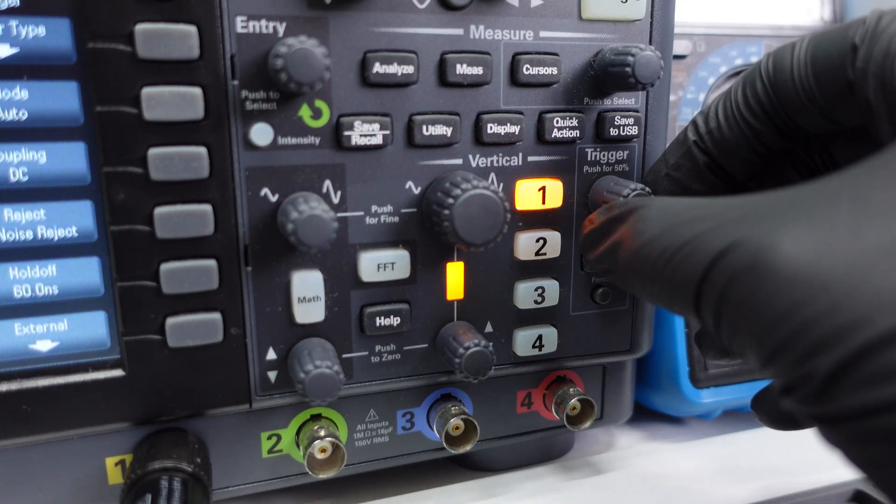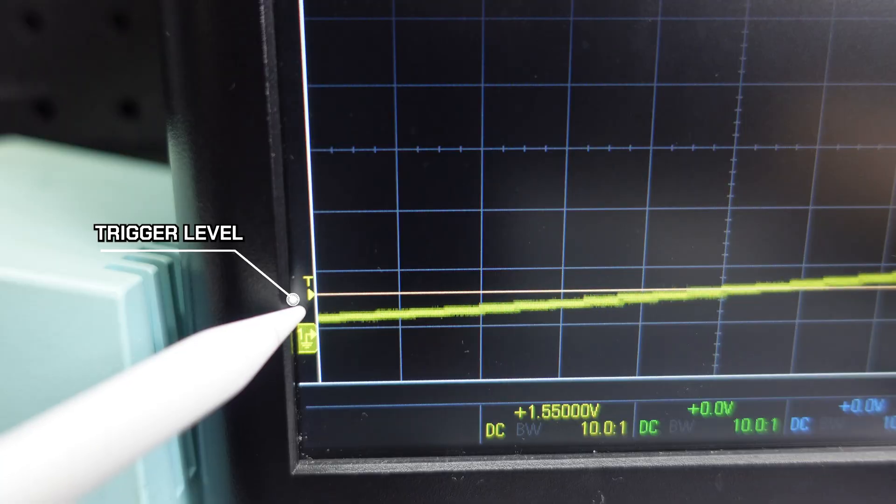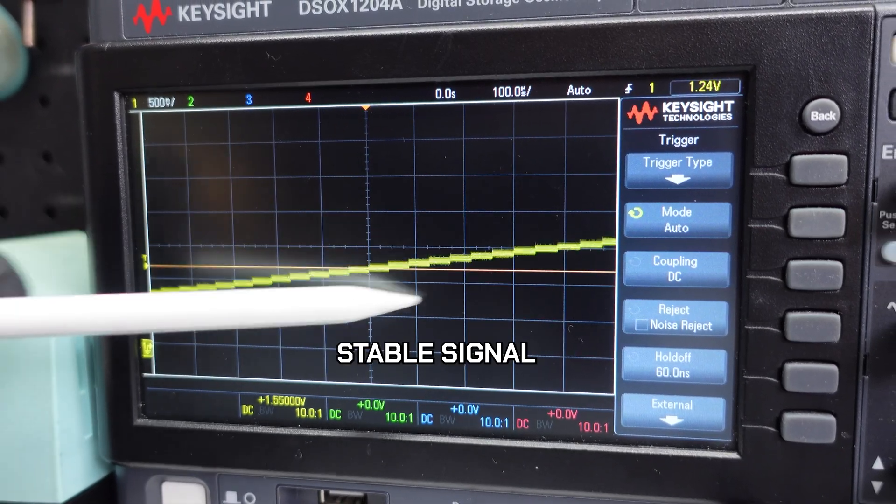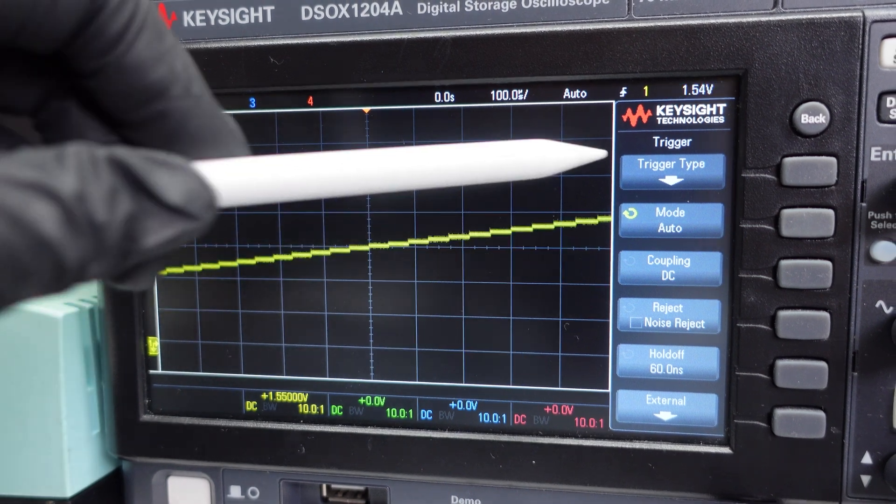So click trigger and make sure the trigger mode is edge triggering. And adjust the trigger level, which is the line labeled T, by using the trigger knob. And as I move it up and down, it adjusts where the waveform starts. Now, the sine wave should stay on screen instead of jumping around.